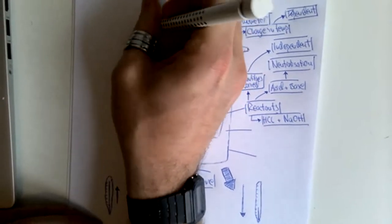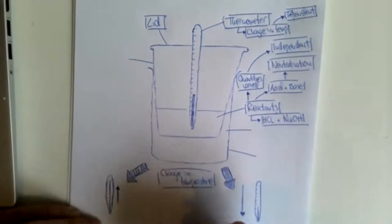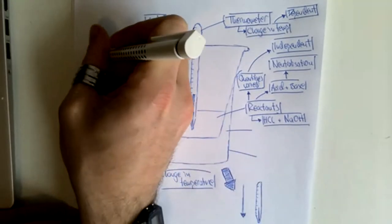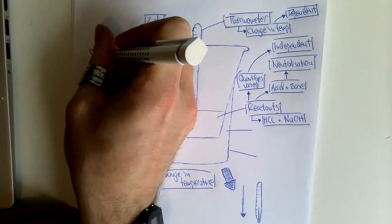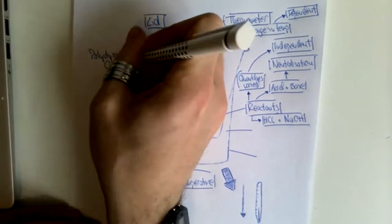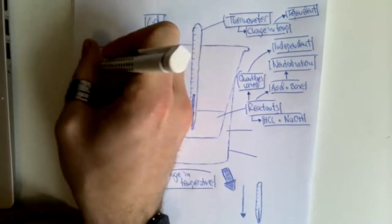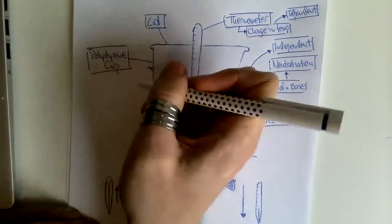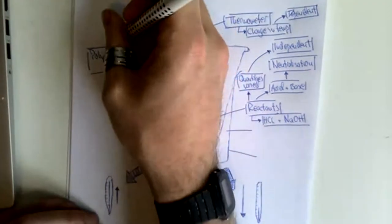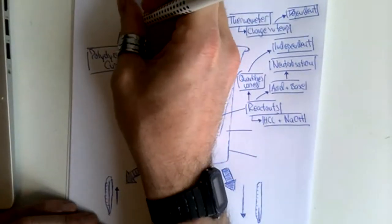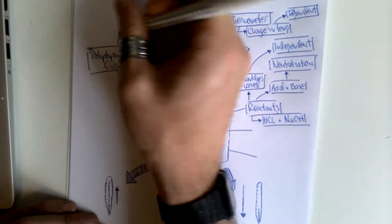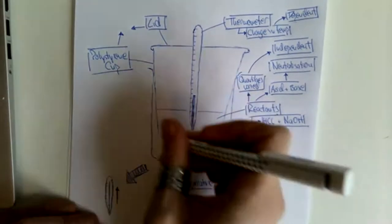On top of the polystyrene cup there is a lid placed, and it's important to remember that the cup itself is made of polystyrene, because both of these add insulation.